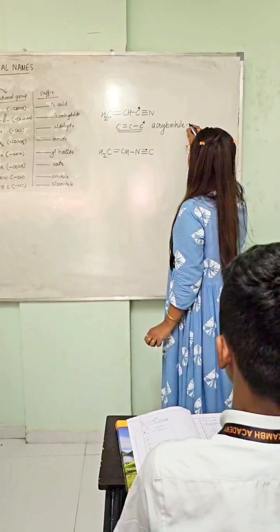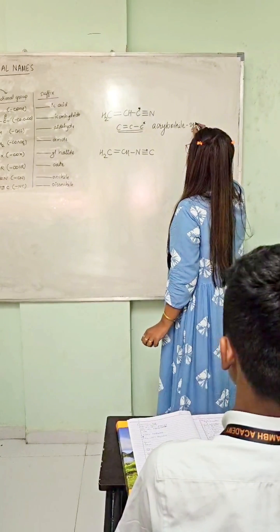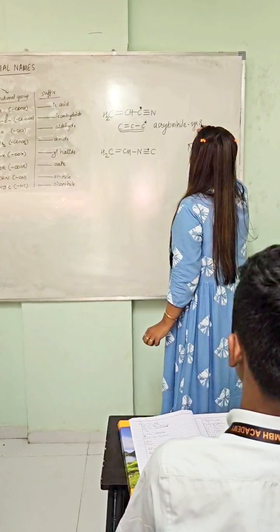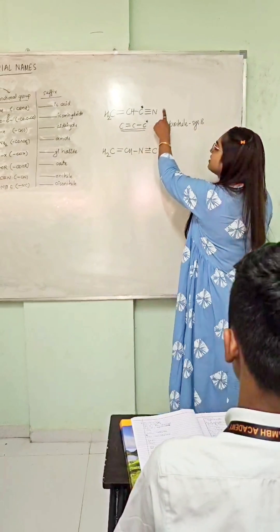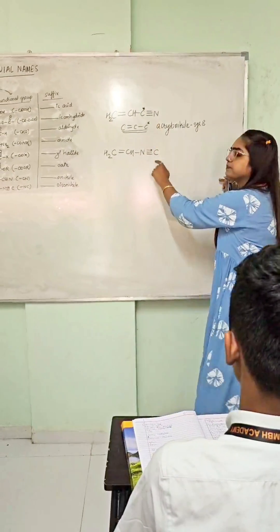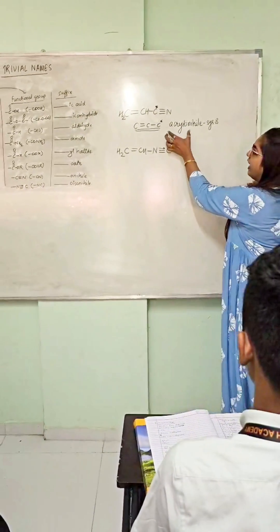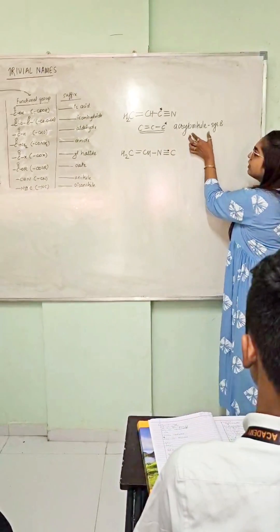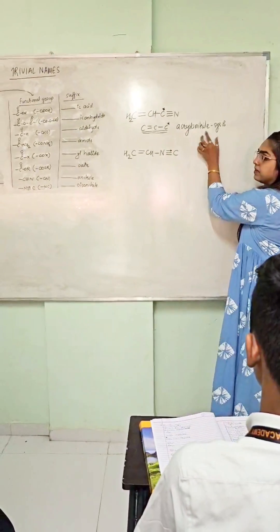Nitrile. So according to System B, what is the name for this compound? It is Acrylonitrile.